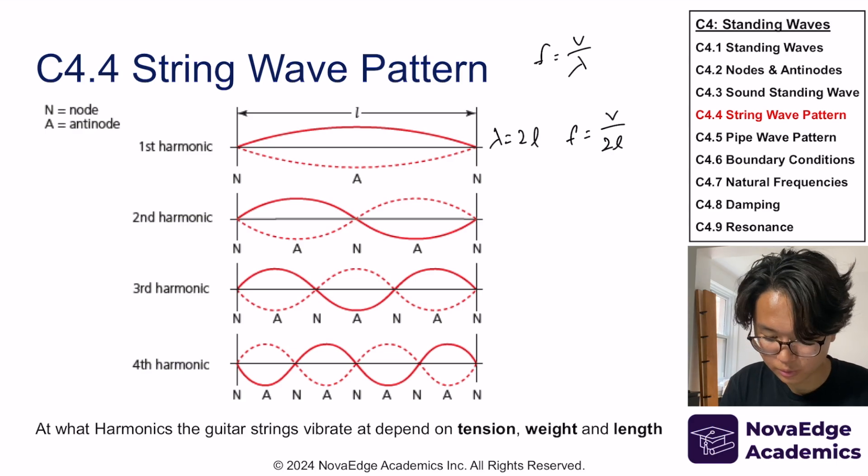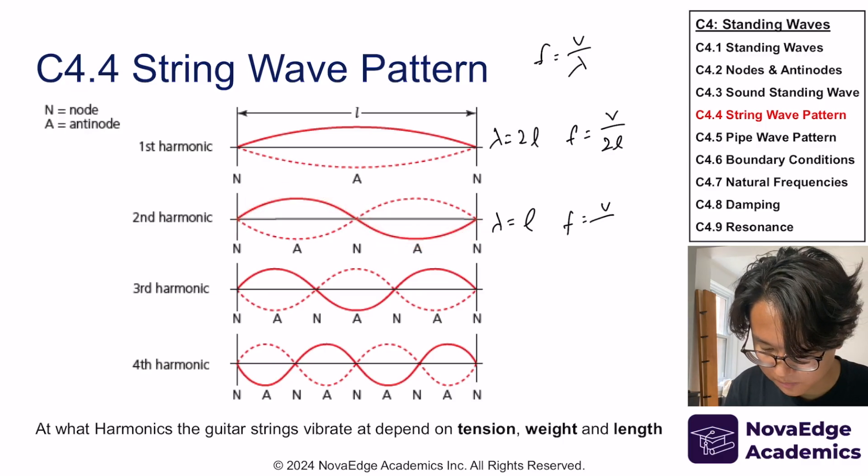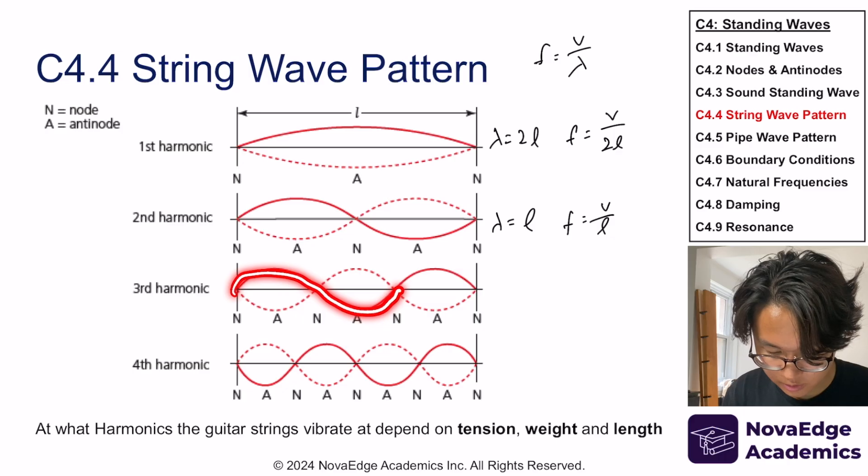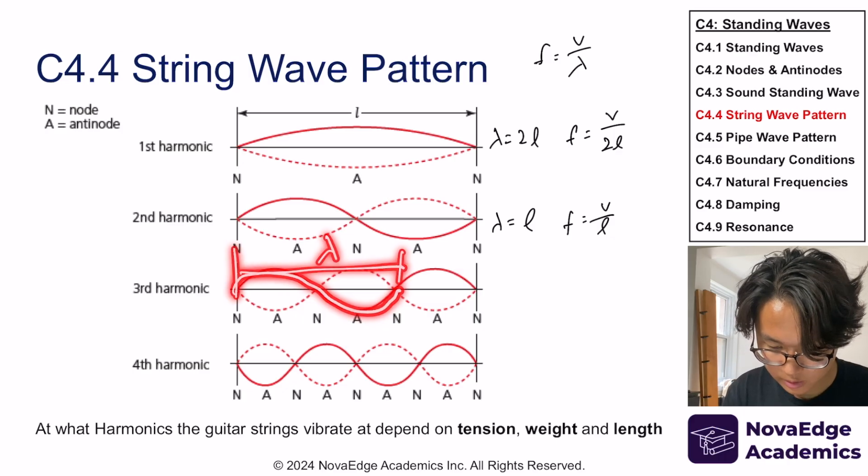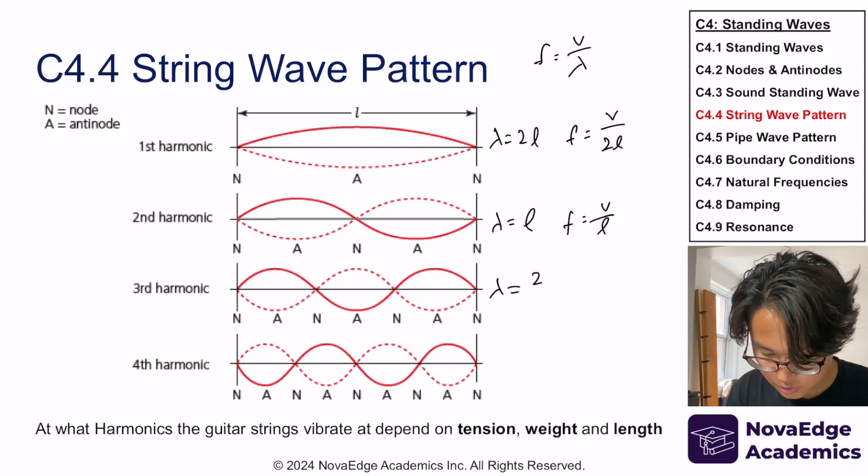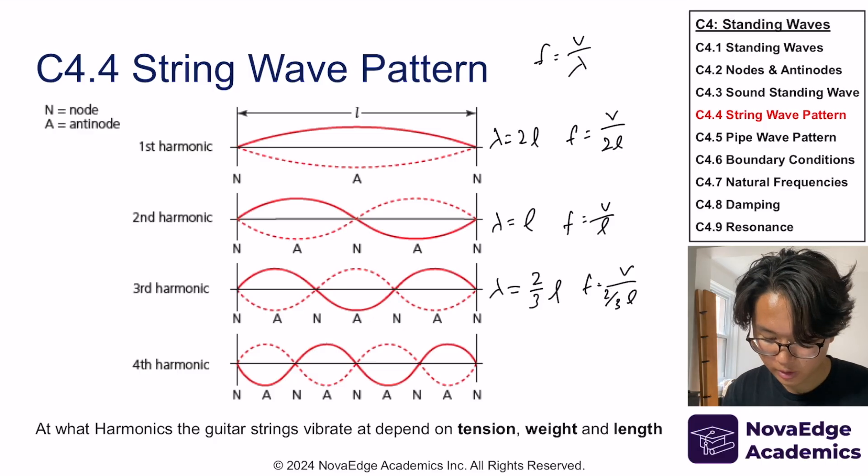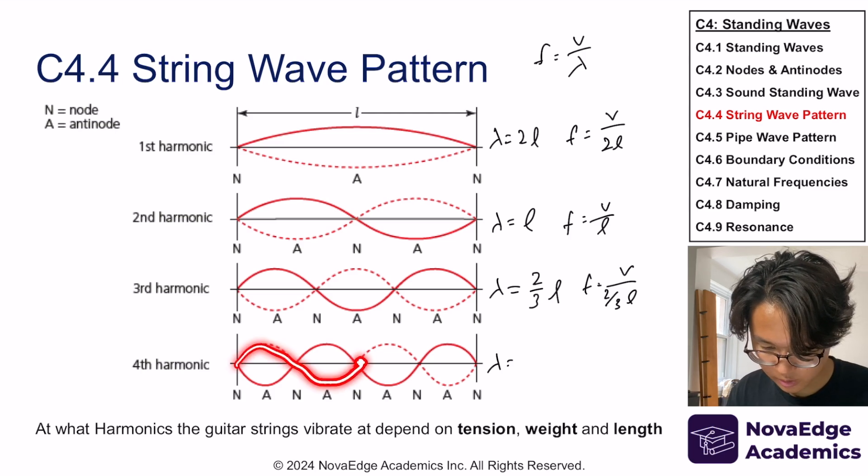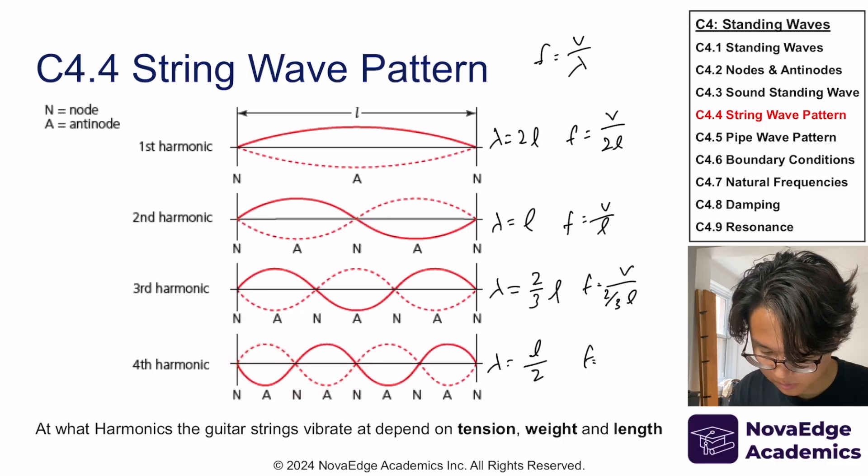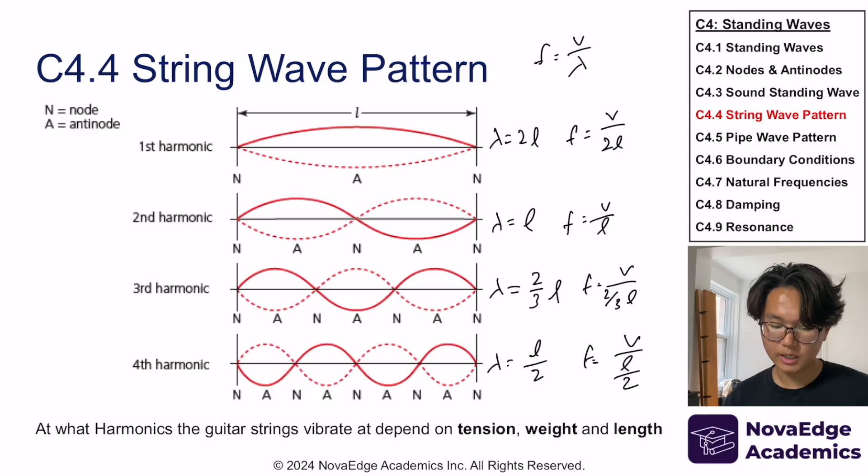How about for a second harmonic? Well, the wavelength now is equal to length L because that's one full length, one full wave. So what is frequency? That's like that. How about third harmonic? Well, the full length of a wave is here, so that's the wavelength. That wavelength is basically two-thirds of a length L. So frequency would be V over two-thirds of length L. How about fourth harmonic? Well, that's just this is the one wave. So that's going to be L over two.